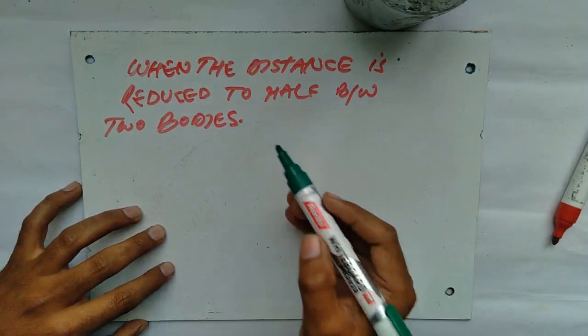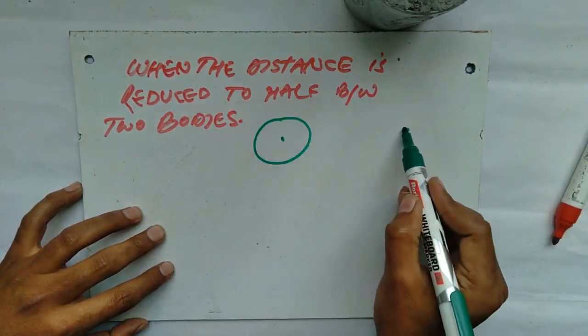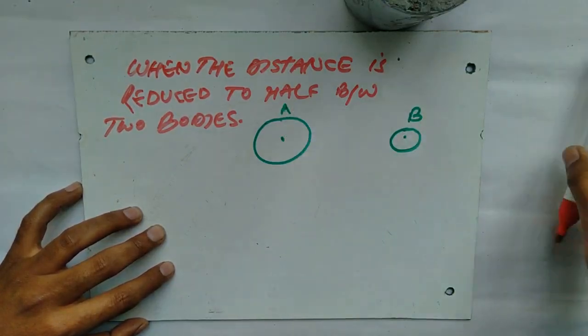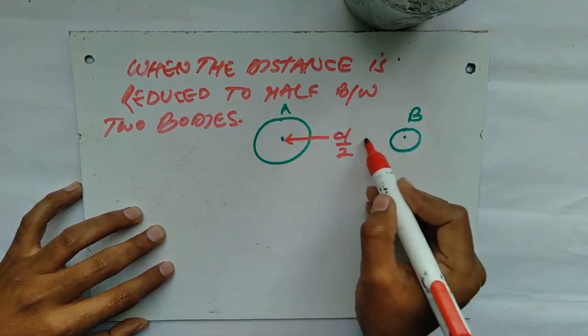So the center to center distance between them would be now d by 2. Because we have taken it earlier, the distance between them was d.